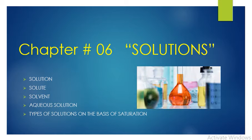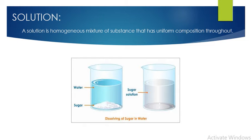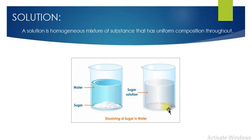Let's start our lecture. What is a solution? A solution is a homogeneous mixture of a substance that has uniform composition throughout. For example, if we dissolve sugar in water, we get a sugar solution. You cannot see the individual particles of sugar in the solution — it looks the same throughout, which means it has a single phase.